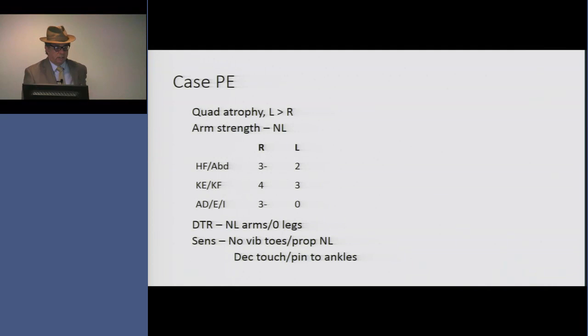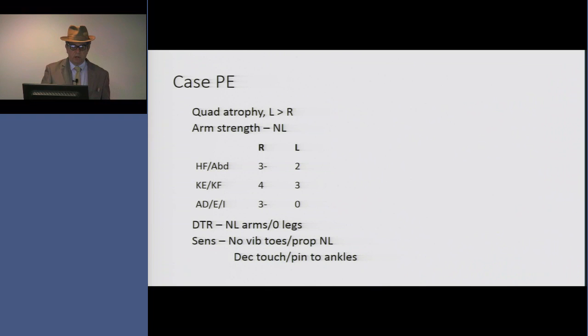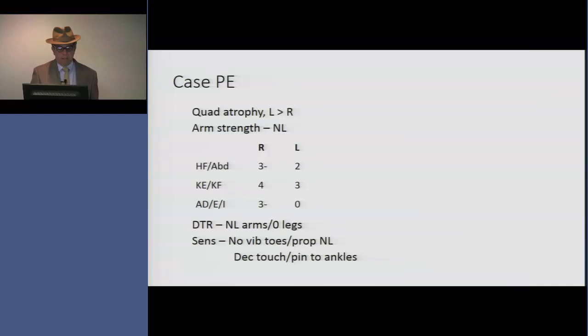On exam, she had quad atrophy, left more than right. Her arm strength was normal, but in her legs she had severe weakness in the hip flexors and hip abductors, knee extensors and flexors, and ankle dorsiflexors and everters, and it was much worse on the left than the right — the leg it began in. She had no reflexes in her legs, but they were present in the arms, and she had a loss of touch and vibration in the toes and up to the ankles.